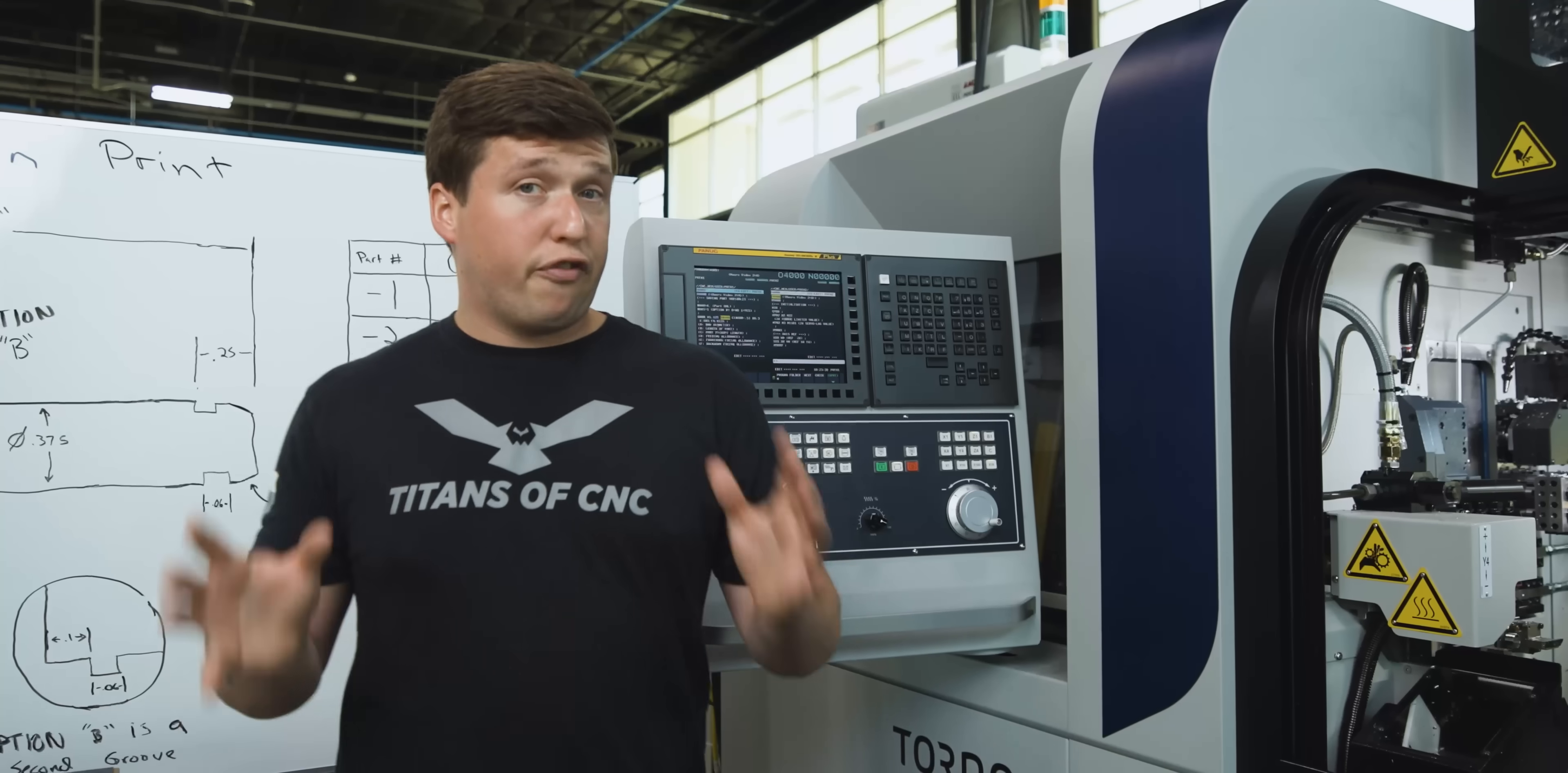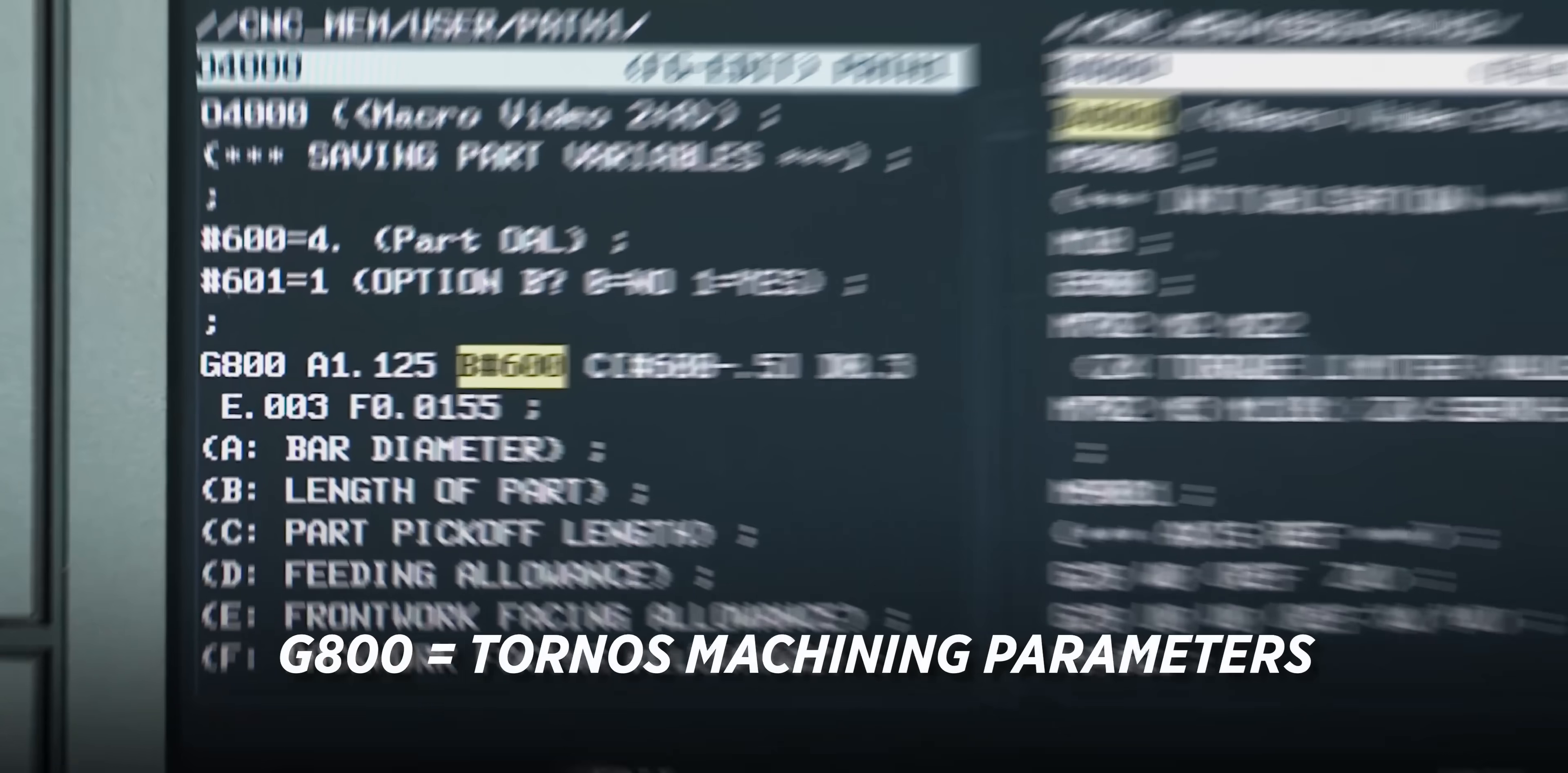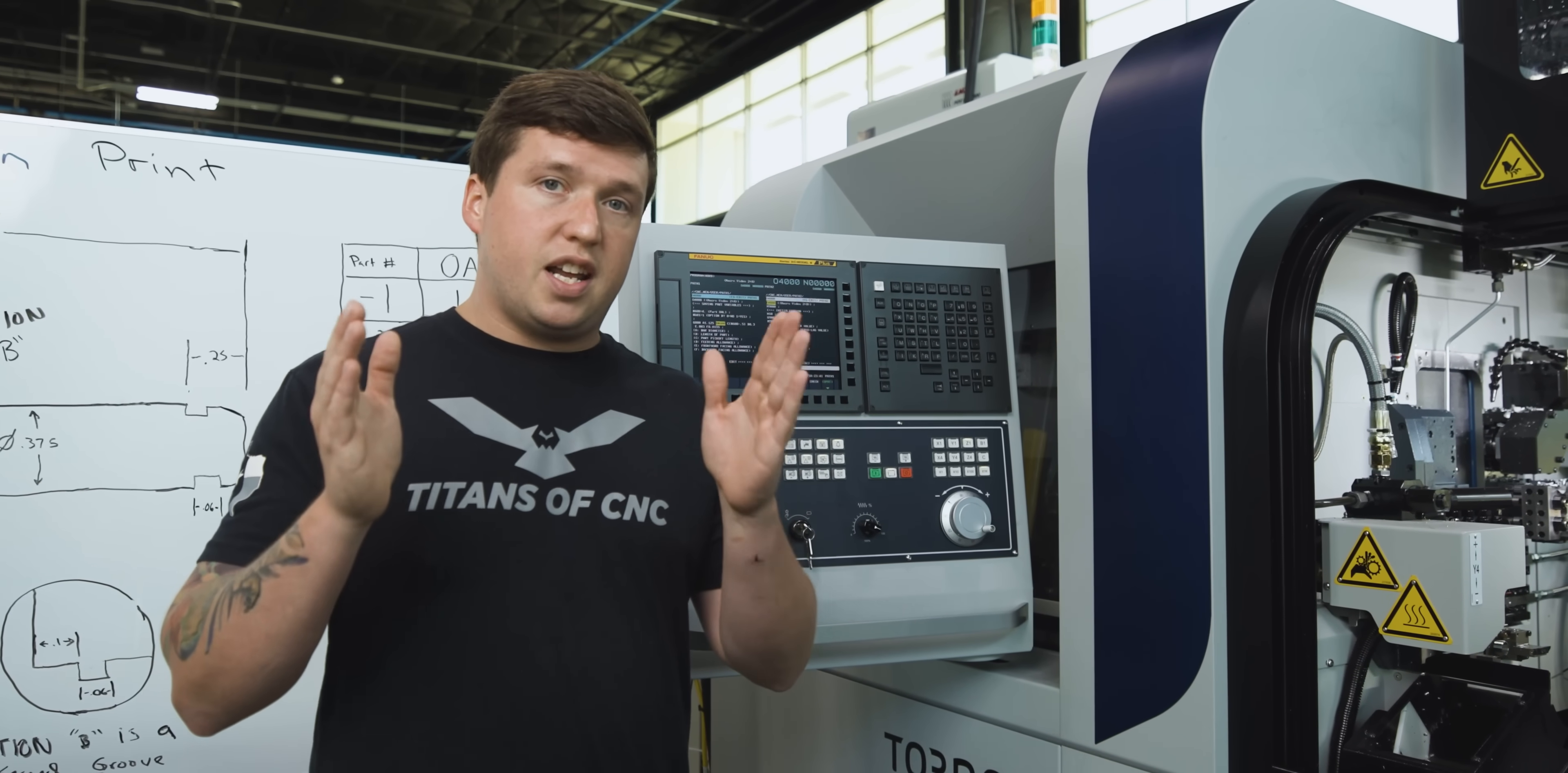The first thing this is going to update is our Tornos machining parameters, which is G800 right here. You'll notice that B is pound 600. This B is the length of our part, the amount of stroke the machine needs to make the part.